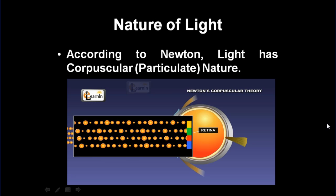What is the nature of light? According to Newton, light has a corpuscular nature. By corpuscular we mean particulate nature or light is made up of particles called photons.